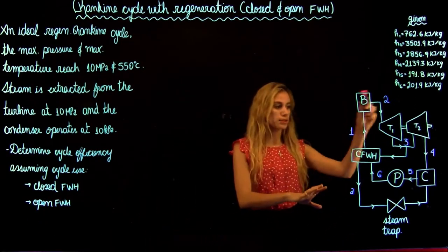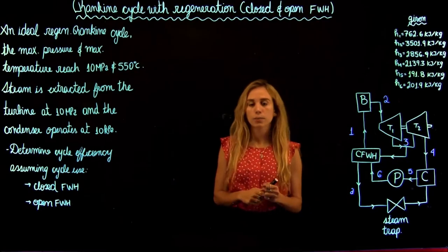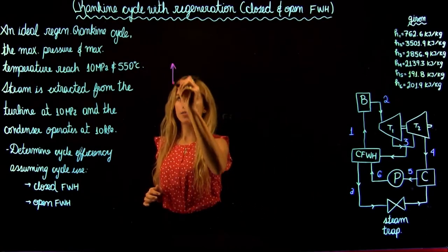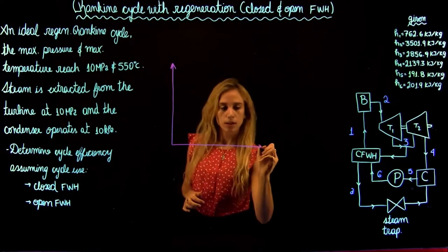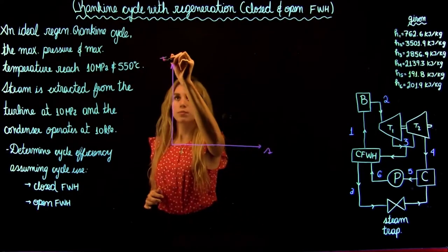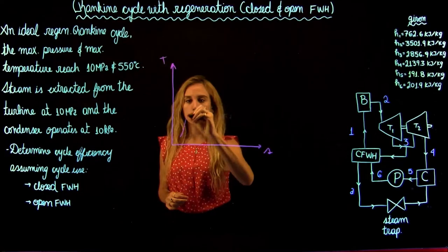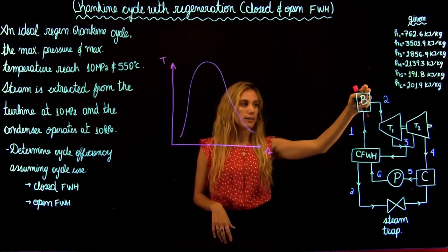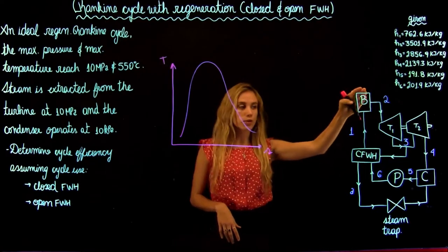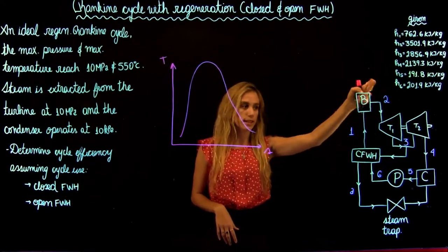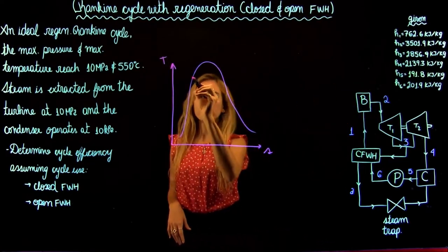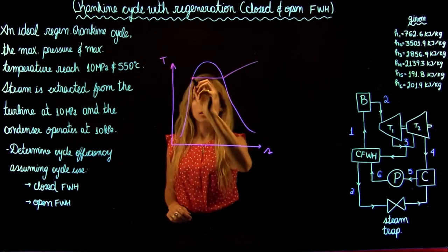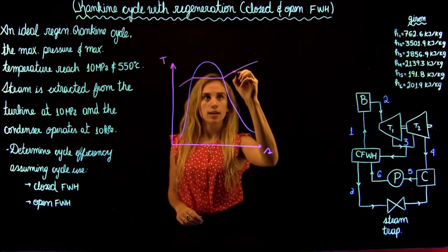This is how our process diagram looks like and we're going to start by drawing our TS diagram. We're going to have our entropy and temperature axes and our vapor dome or curve. We're going to start at state number two, where we know it's going to be in a superheated state, on the high pressure line.